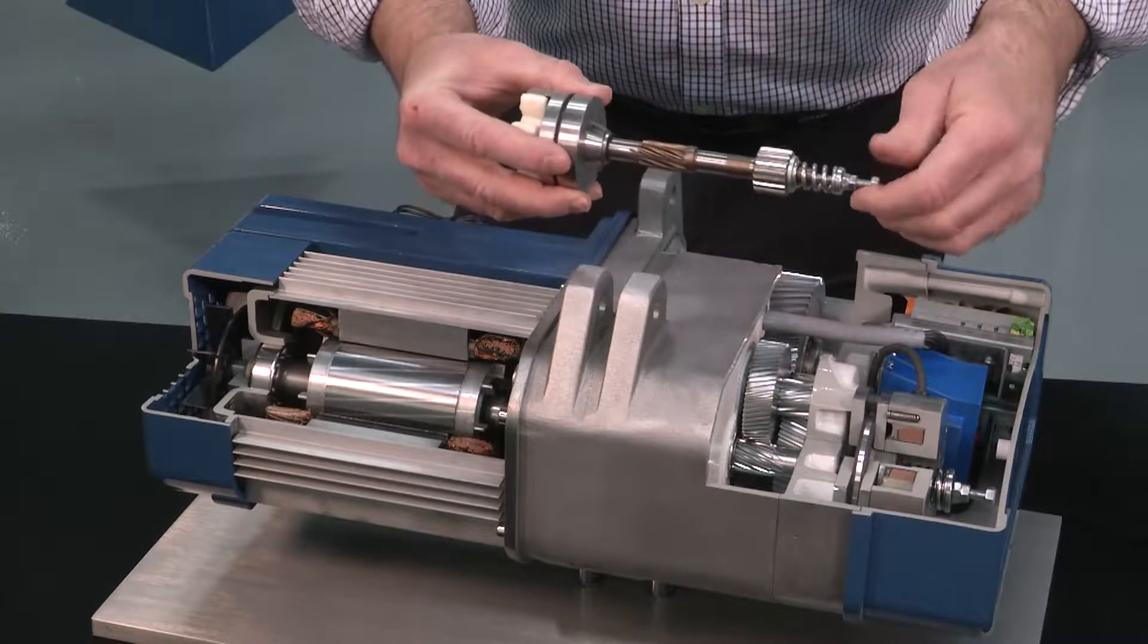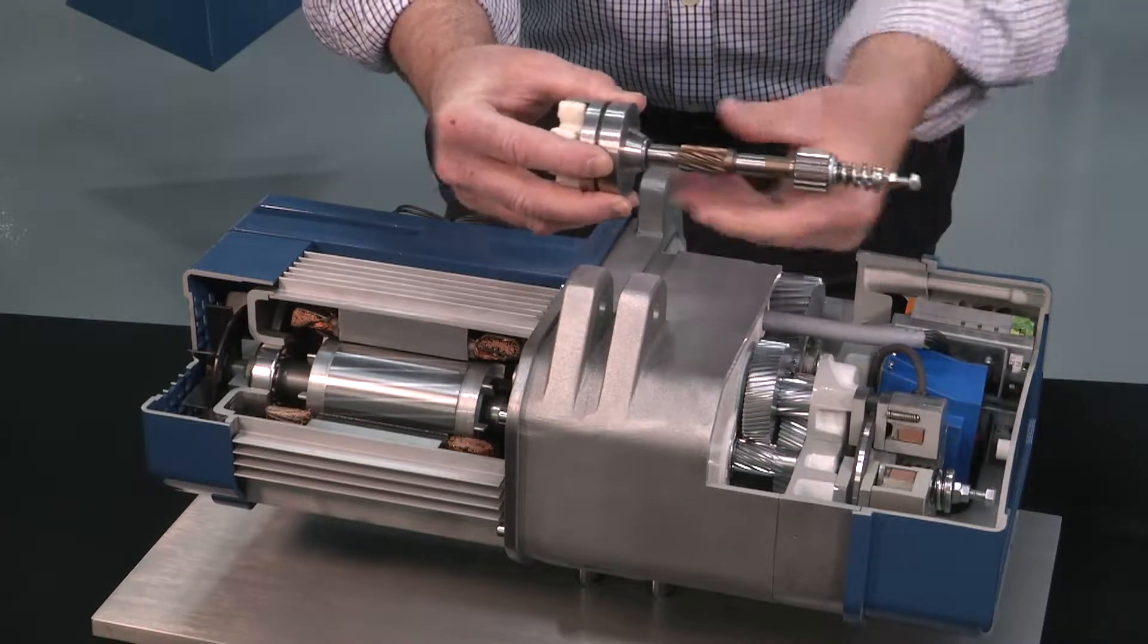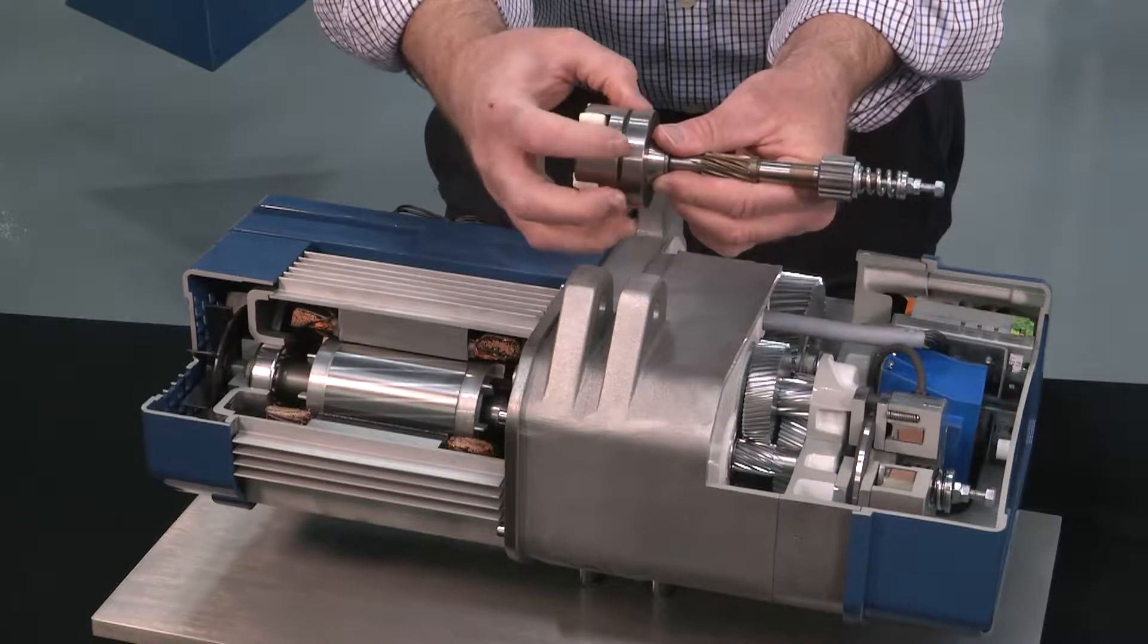This is your clutch adjustment. You tighten this to make the clutch tighter or looser.